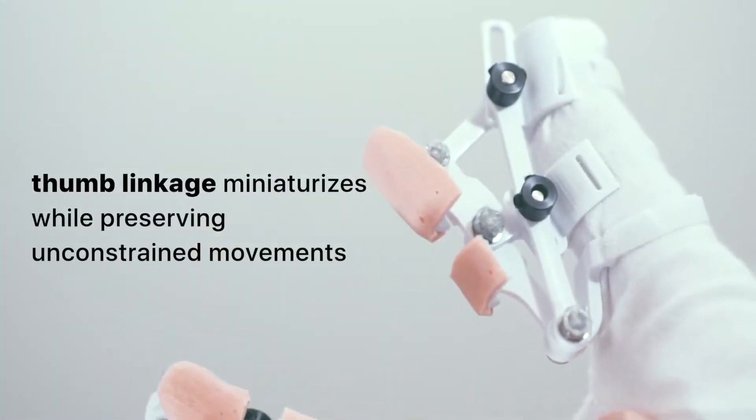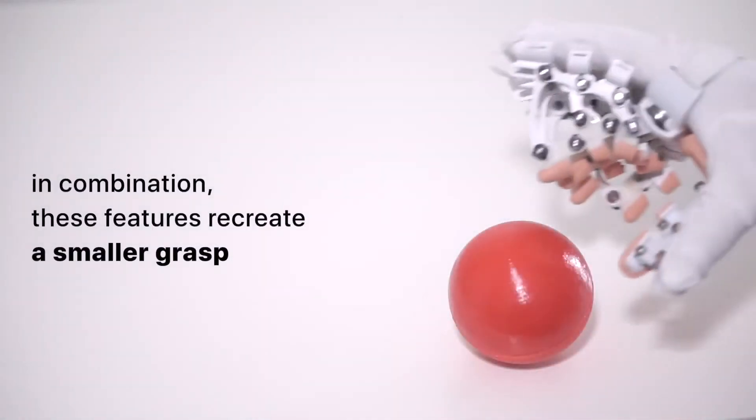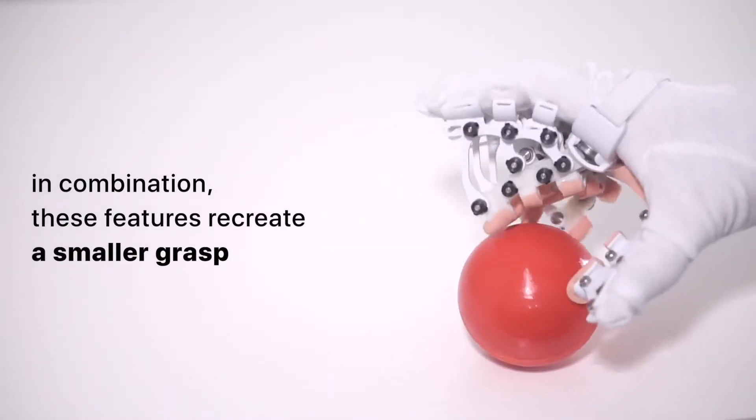Thumb linkage miniaturizes while preserving unconstrained movements. In combination, these features recreate a smaller grasp.